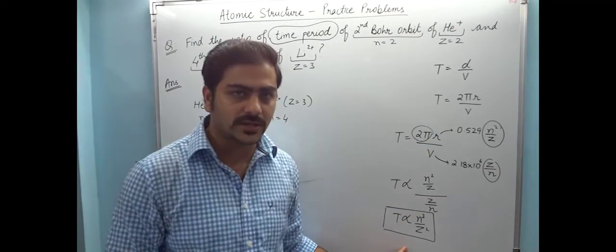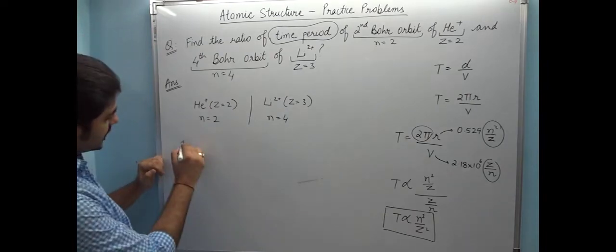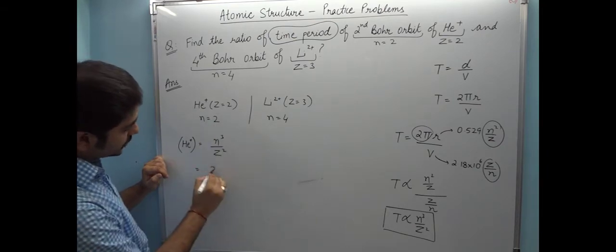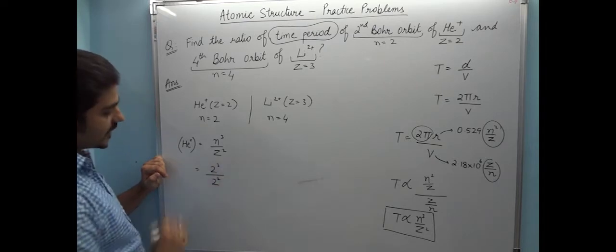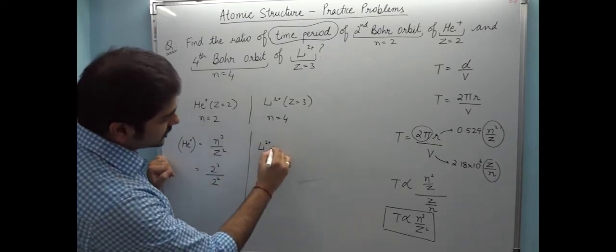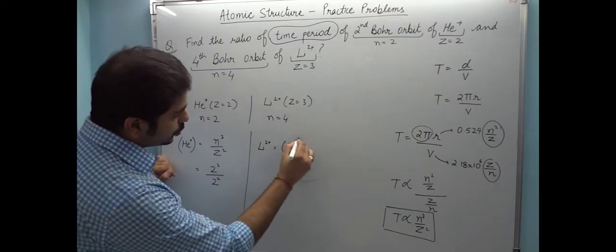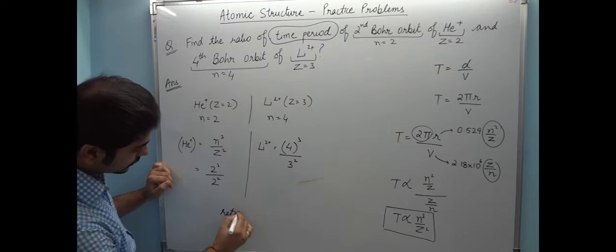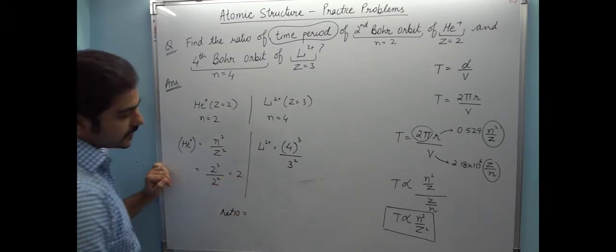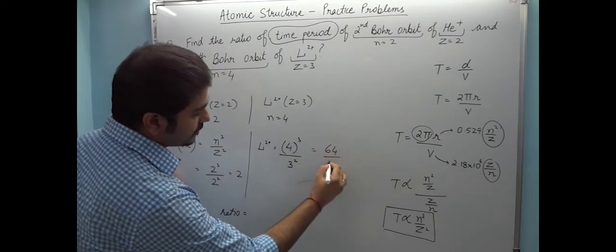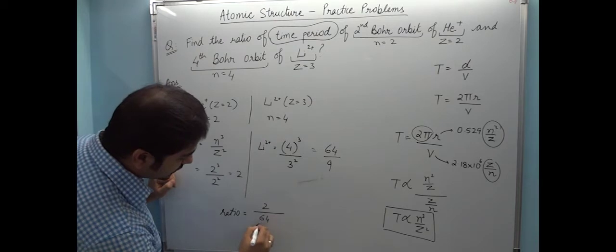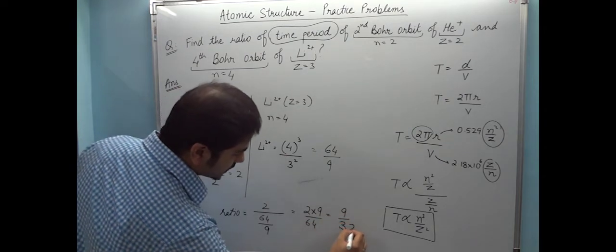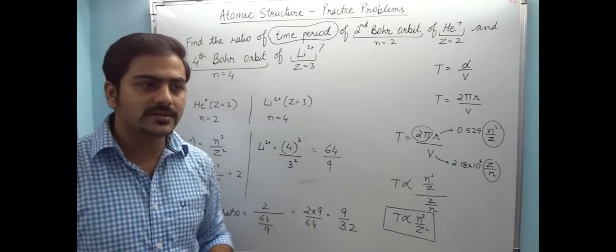Let's just do it. For helium: n³/Z². For lithium: n³/Z². It's the ratio. The value for helium is n=2, Z=2, so 2³/2² = 8/4 = 2. For lithium, n=4, Z=3, so 4³/3² = 64/9. Effectively the answer is 2 ÷ (64/9) = 2 × 9/64 = 9/32. Answer is 9/32.